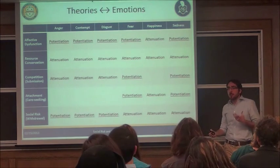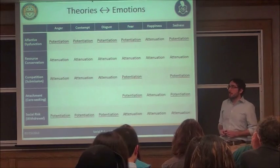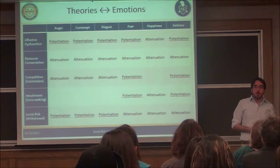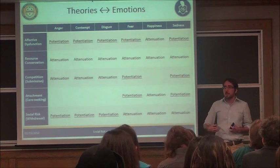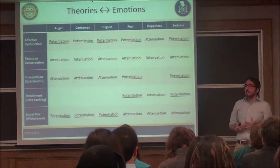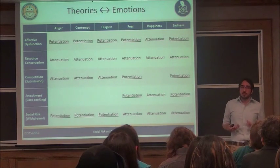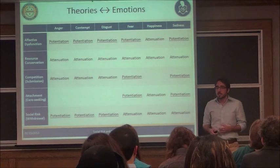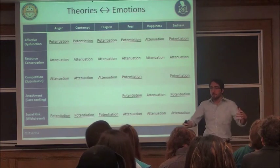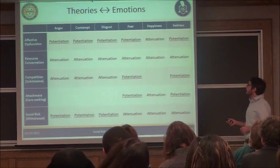An evolutionary version of attachment theory views depression as an adaptive response to the loss or rupture of an important attachment bond — with a loved one or a parent. When you detect that this relationship has been lost or ruptured, there's a surge of discomfort and a distress signal saying 'I'm very upset, please come back, don't leave me, repair this relationship.' To signal this distress, we should see a lot of fear and sadness, and very little happiness.